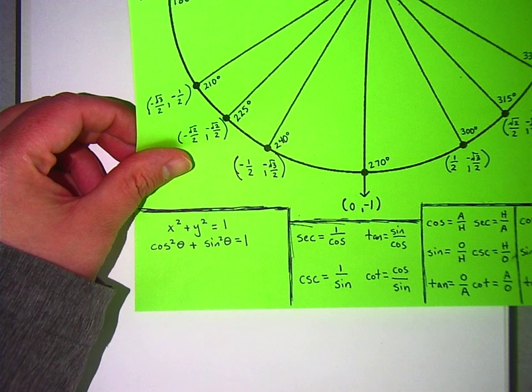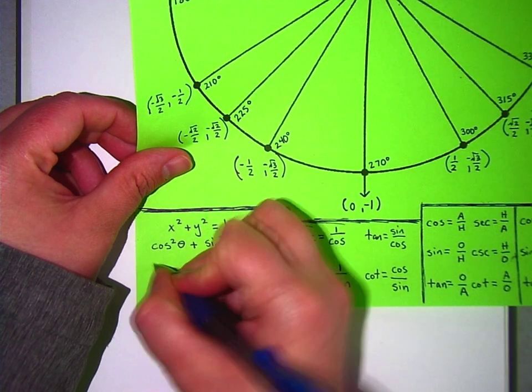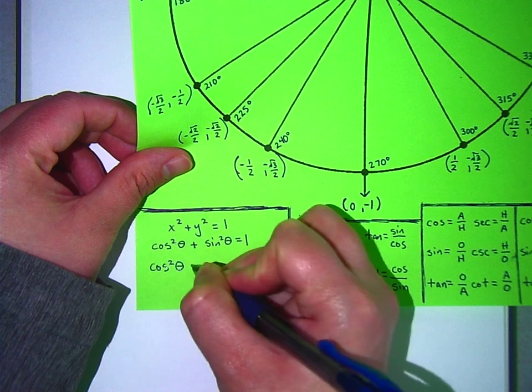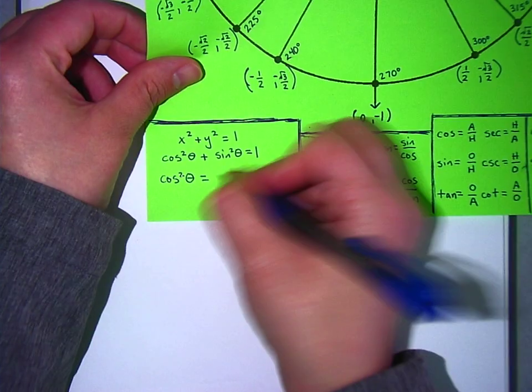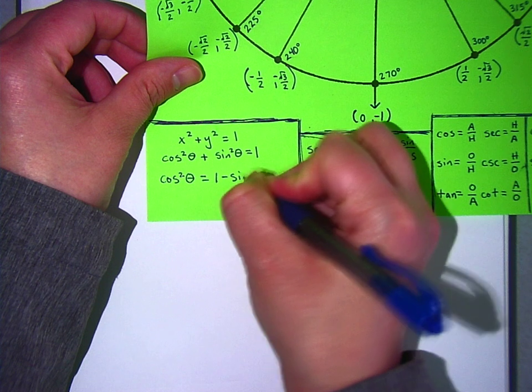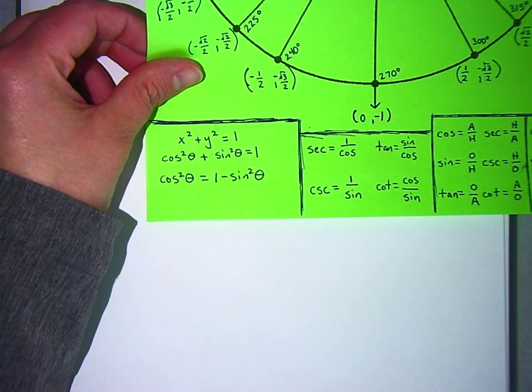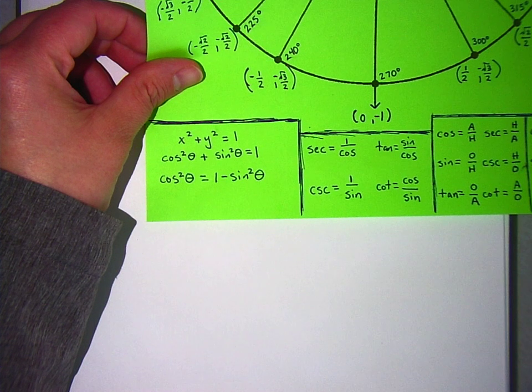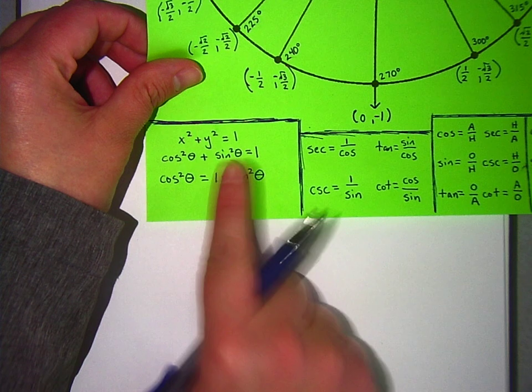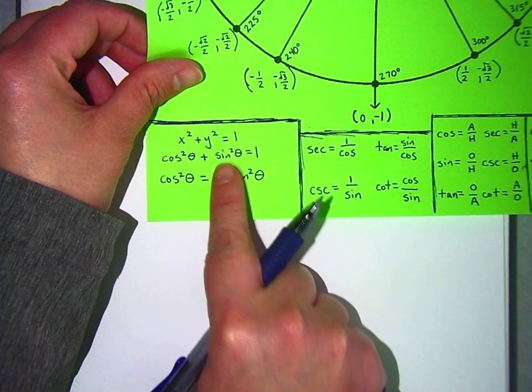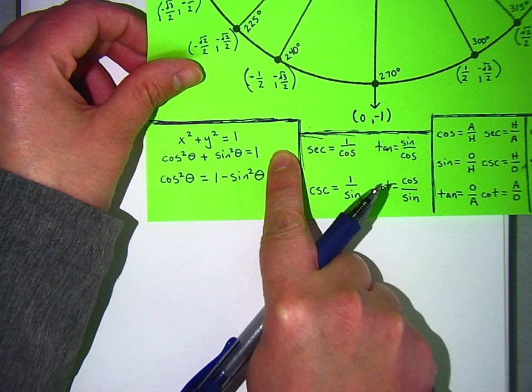The other two formulas are pretty simple. Here's what this one is. Cosine squared theta equals one minus sine squared theta. Where'd that one come from? Well, the whole thing comes from the Pythagorean theorem, but this one comes from just subtracting sine squared over there.